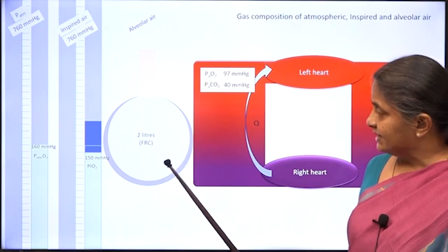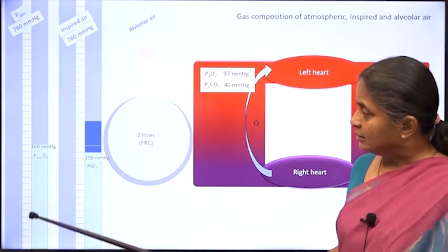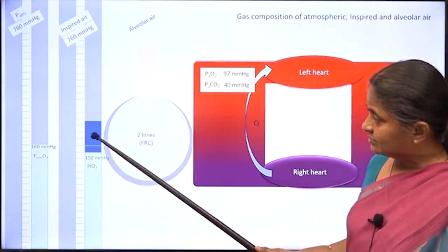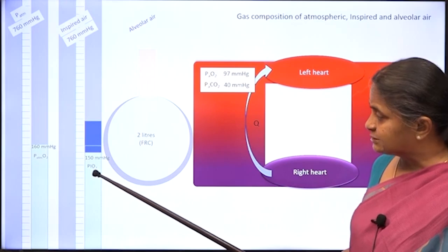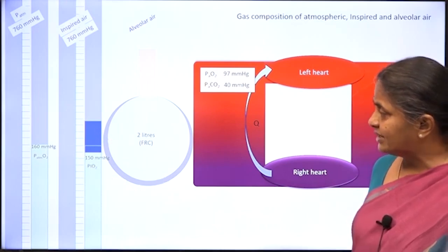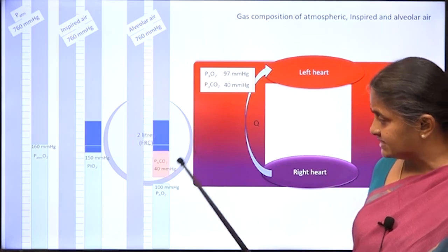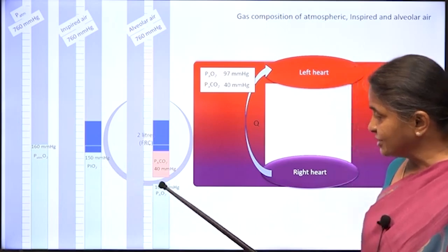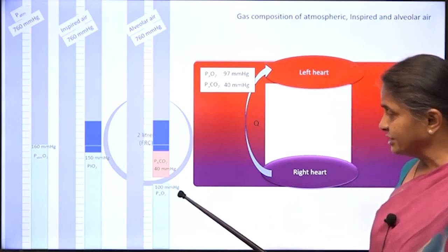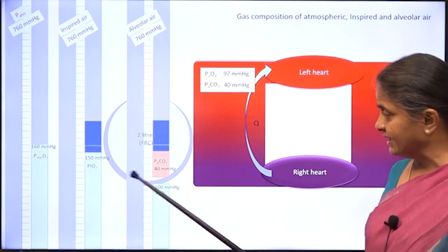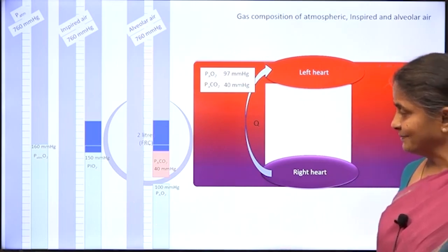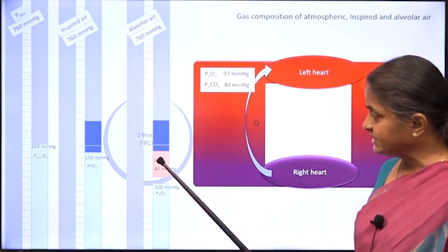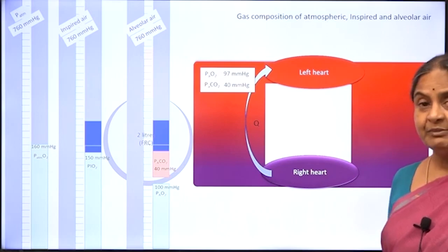What about the composition of alveolar air? You notice there are two major gases in atmospheric air, three gases in inspired air — nitrogen, oxygen, and water vapor — and when it comes to the alveolus, a fourth gas is added: carbon dioxide. Alveolar oxygen partial pressure is at 100 mmHg because some of the oxygen from inspired air has diffused into blood, and some carbon dioxide from blood has diffused into the alveolus, setting the alveolar carbon dioxide partial pressure at 40 mmHg.